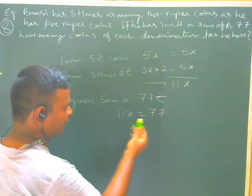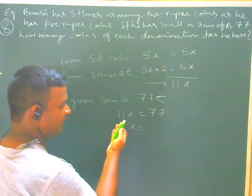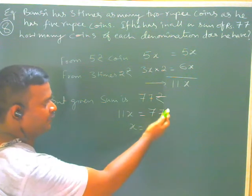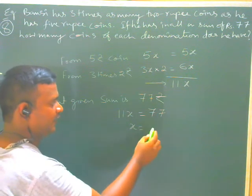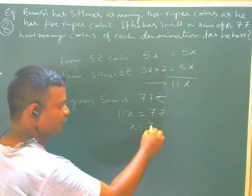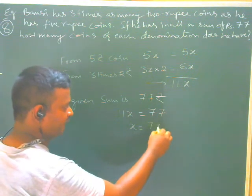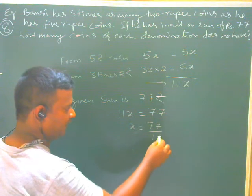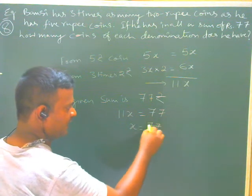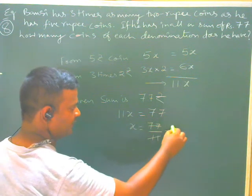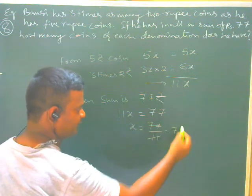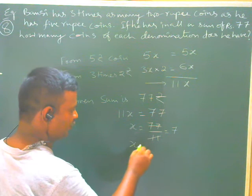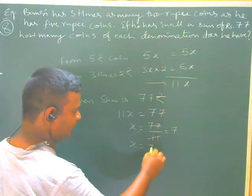Solving for X: X equals 77 divided by 11. 77 divided by 11 cancels 7 times. Therefore, X is equal to 7.